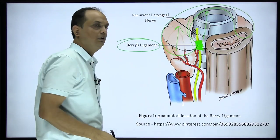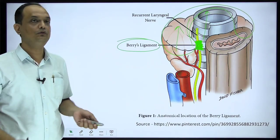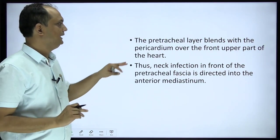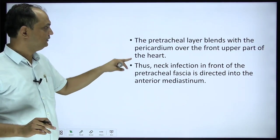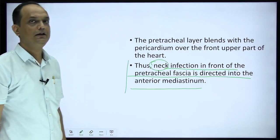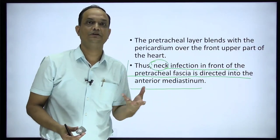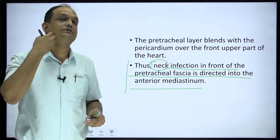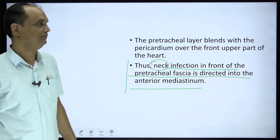The ligament of Berry connects the posterior lobe to the cricoid cartilage and also has connections to the thyroid cartilage and hyoid bone. During deglutition, the hyoid bone lifts, the larynx rises anteriorly, and since the thyroid gland is connected to the larynx via the pre-tracheal fascia modifications, the thyroid gland moves upward. Additionally, since the pre-tracheal layer blends with the pericardium over the front of the heart, neck infections anterior to the trachea can descend directly into the anterior mediastinum.